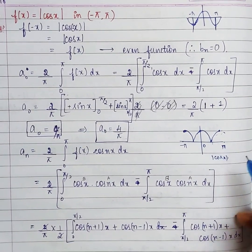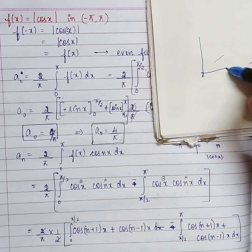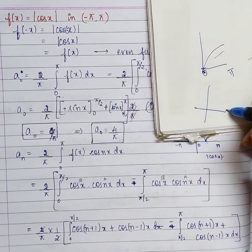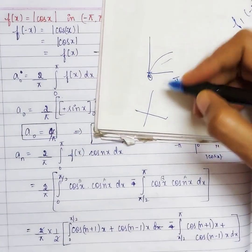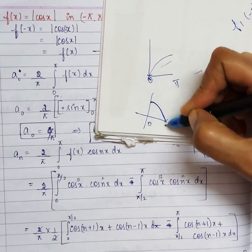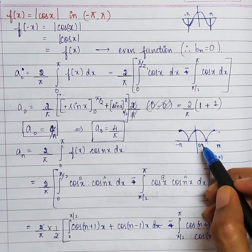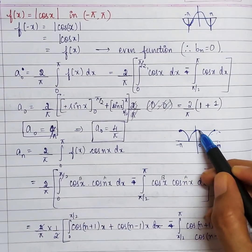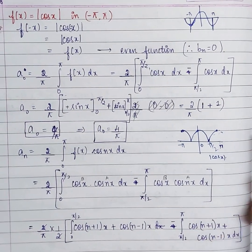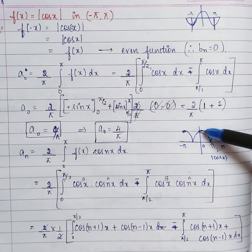However, if you look at the function from 0 to π, it is not uniform. From 0 to π/2 it is decreasing, and from π/2 to π it is increasing. So from 0 to π the function does not follow a single pattern, and we need to split the integral.